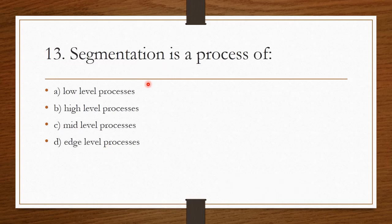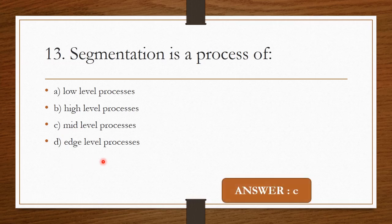Question 12: Segmentation is the process of — Option A: Low level process. Option B: High level process. Option C: Mid level process. Option D: Edge level process. The correct answer is Option C — segmentation is a mid level process.